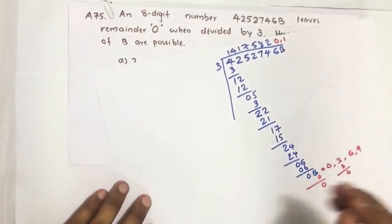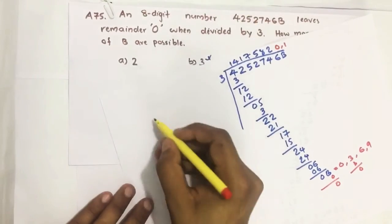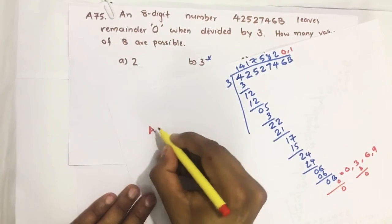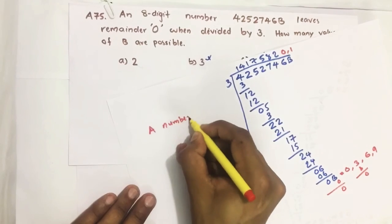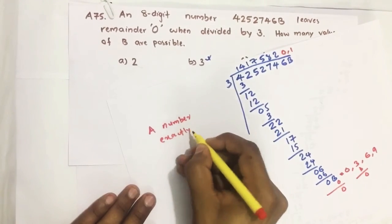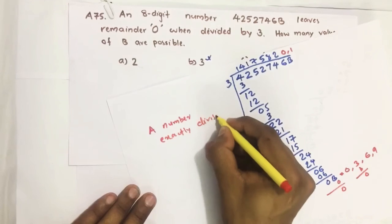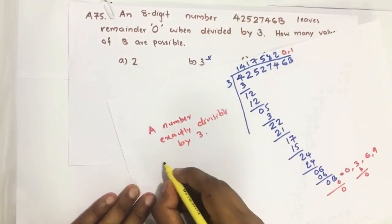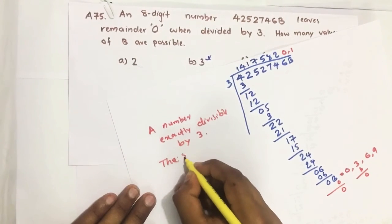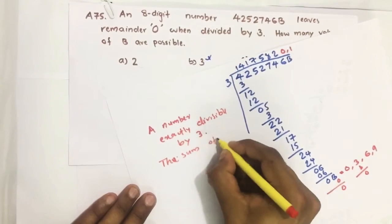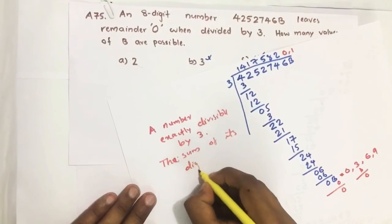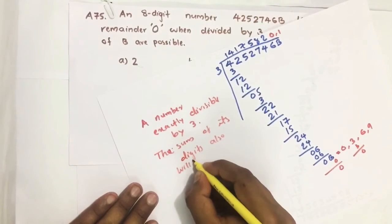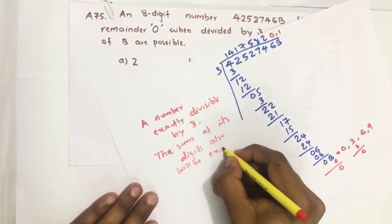Otherwise we can also do this using some tricks. You know, some of you may be knowing: if a number is exactly divisible by 3, the sum of its digits will also be exactly divisible by 3.